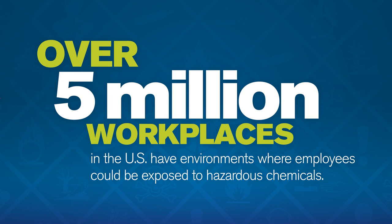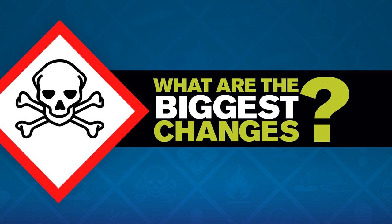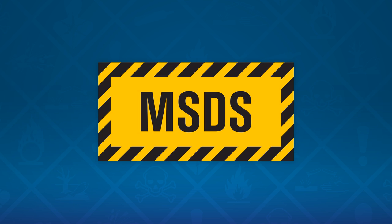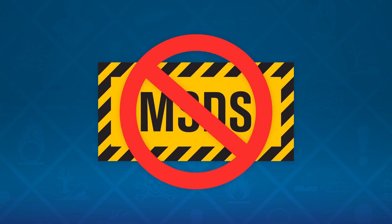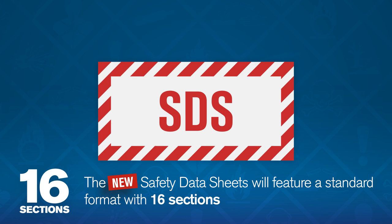There are over 5 million workplaces in the U.S. where employees could be exposed to hazardous chemicals. So what's changing? With GHS, Material Safety Data Sheets, or what used to be known as MSDS, will now be Safety Data Sheets or SDS. The Safety Data Sheets will feature a standard format with 16 sections.